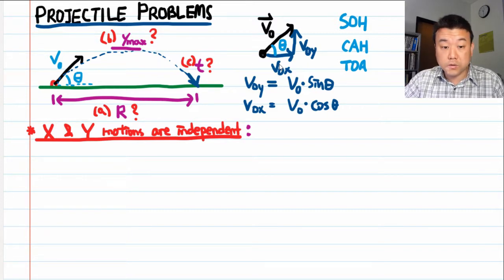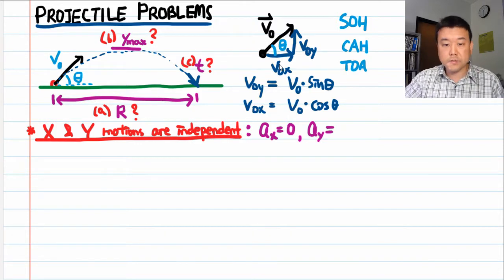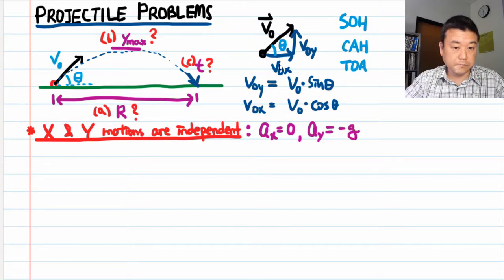So the acceleration along the x direction or horizontal direction is easier. It's zero. So the horizontal kinematics equations will appear simpler. And the acceleration along the y direction. Let's say the upward is positive. So it'll be minus g.